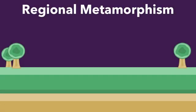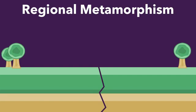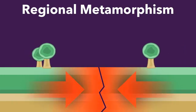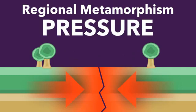Now let's talk about the second type: regional metamorphism. This one is going to be more from pressure. Imagine that I have a plate boundary here — a fault, a crack — and that these two plates are coming together, so it's a convergent plate boundary. In the middle, there's going to be immense pressure, and that pressure can cause the rocks trapped in the middle to become metamorphosized. All along this boundary you'll find metamorphic rocks. This is different from contact metamorphism in that it's not so much about the heat — it's more about the pressure.